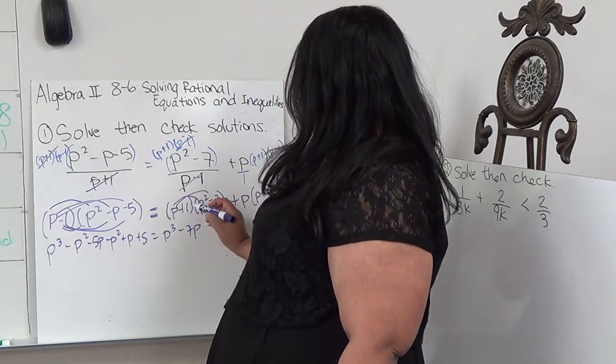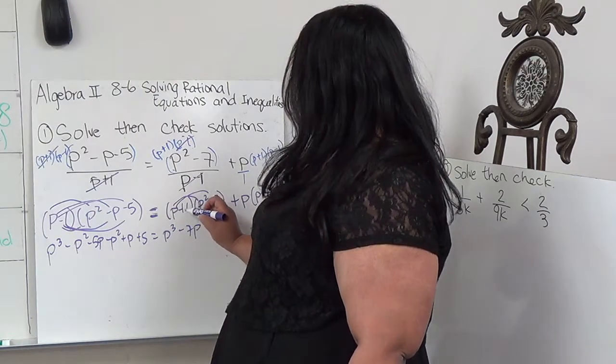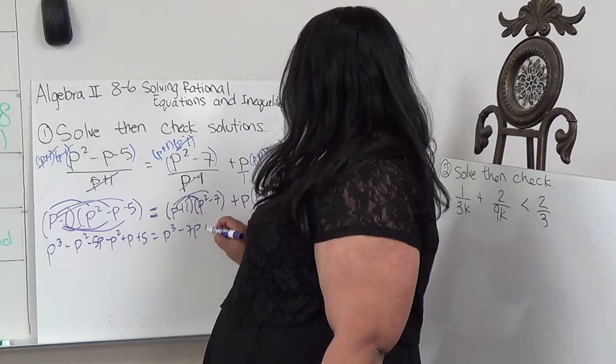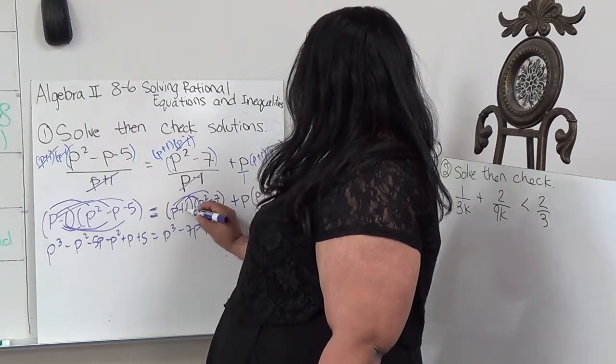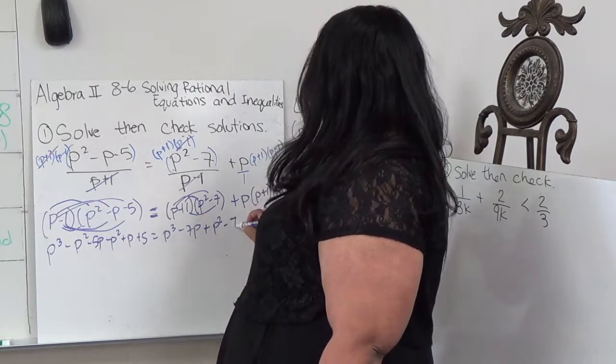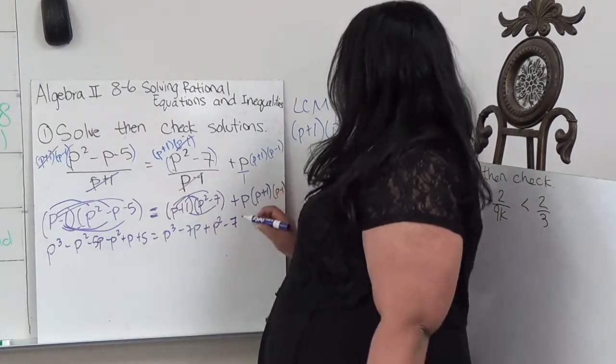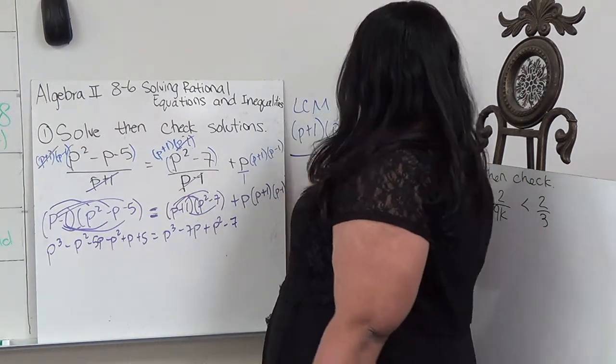P² minus 7P plus 5. And then this would be, I'm going to work it out here.